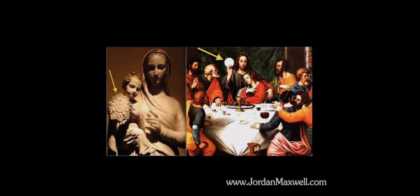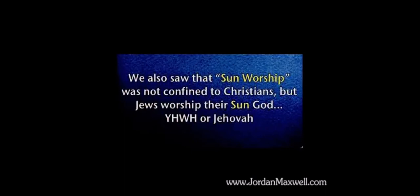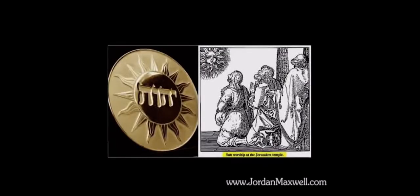Keep in mind, this is in the Vatican. Also in the Vatican, you will see a statue of Mary with the baby Jesus, who is showing you that he represents the Son. Then the older Jesus — he's still showing you he represents the Son, S-U-N. Son worship was not confined to Christians; Jews also have their Sun God, called Yahweh or Jehovah. You will always see the four letters in the Hebrew alphabet for God's name — the Tetragrammaton.